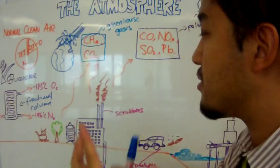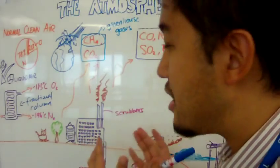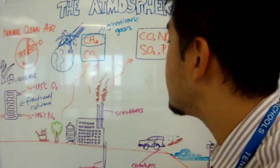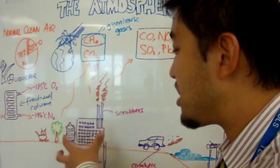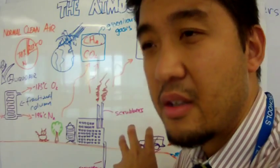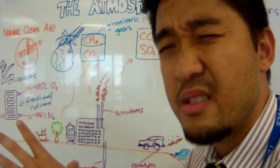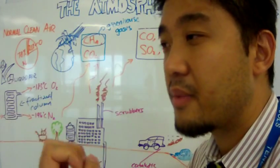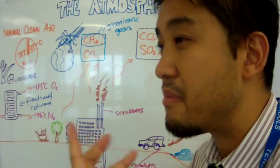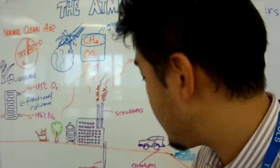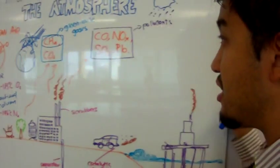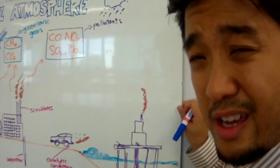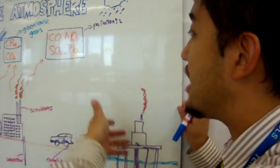CO₂ and methane also come from man-made sources like combustion of fossil fuels in factories. Also from landfills and waste areas where things undergo decay, which emits a lot of methane. Drilling for oil and gas also releases a lot of CO₂ and methane into the atmosphere.